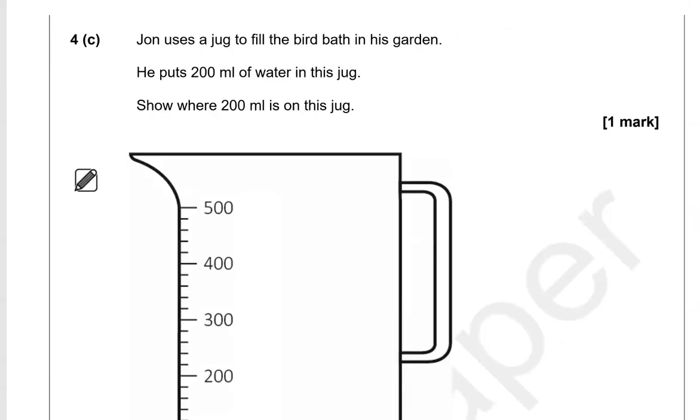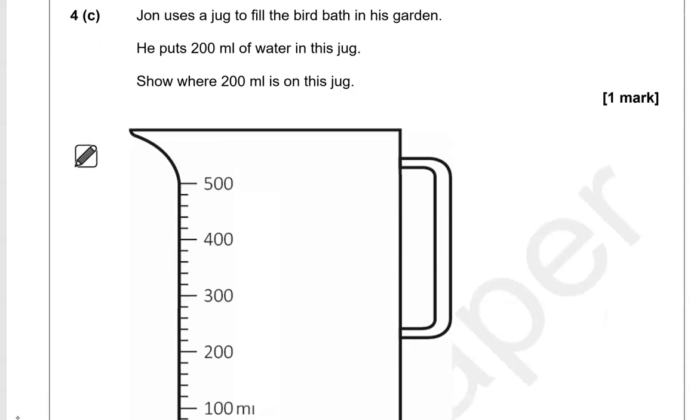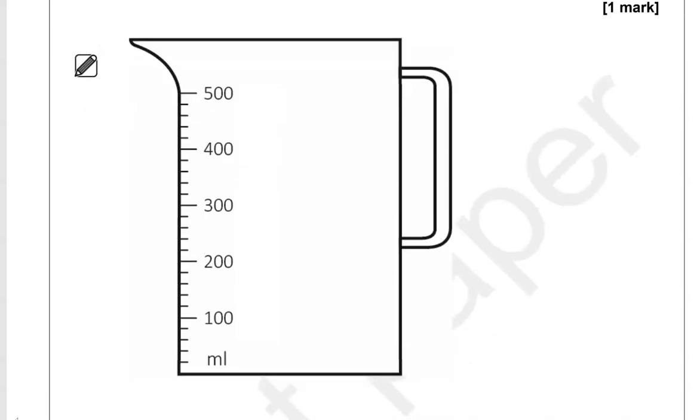John uses a jug to fill the bird bath in his garden. He puts 200 milliliters of water in this jug. Show where 200 milliliters is on this jug. So we've got milliliters. 100, 200, 300, 400 and 500. So we're going to stop at 200.